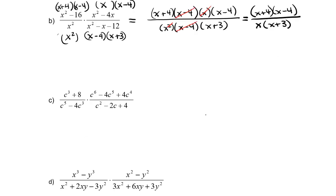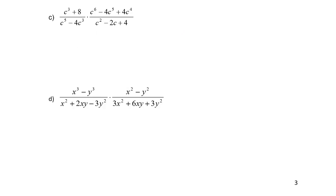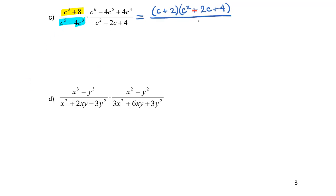In these questions we weren't asked about restricting the domain because notice they're not functions. We now have (c³+8)/(c⁵-4c³) times (c⁶-4c⁵+4c⁴)/(c²-2c+4). So the first part, c³+8, I know factors as a sum of cubes to (c+2)(c²-2c+4). Now working on the denominator, I have c⁵-4c³, so I'm going to factor out c³ and I'll be left with c²-4.